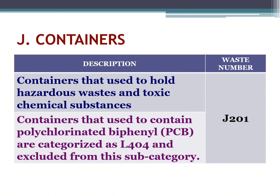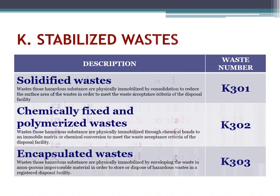The next one is stabilized waste. Solidified waste: waste whose hazardous substances are physically immobilized by consolidation to reduce the surface area of the waste, in order to meet the waste acceptance criteria of the disposal facility. Waste number G201. Chemically fixed and polymerized waste: hazardous substances that are physically immobilized through chemical bonds and an immobile matrix, or chemical conversion, to meet the waste acceptance criteria of the disposal facility. Waste number G202.